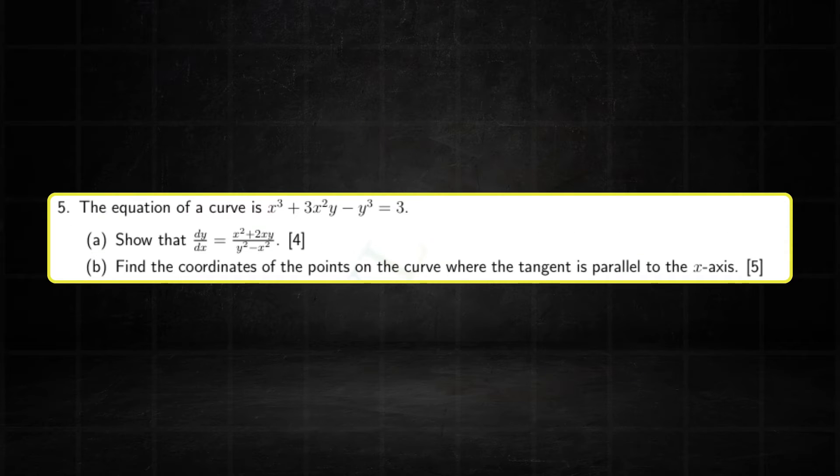Question 5 is a differentiation question. I've chosen to include an implicit function together with its tangent question, since this also appeared in the February-March paper. Do note that, though, some variants in the May-June series will have an implicit function, while others will have parametric equations.